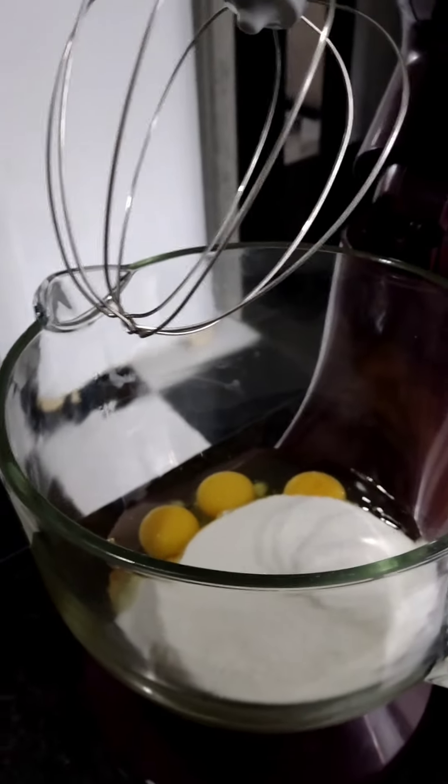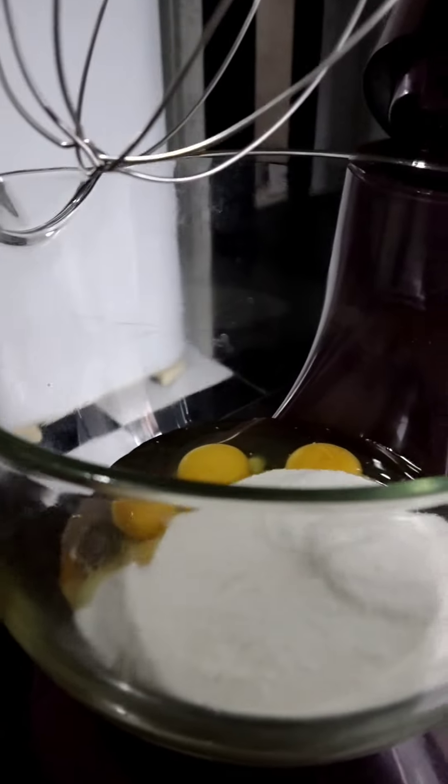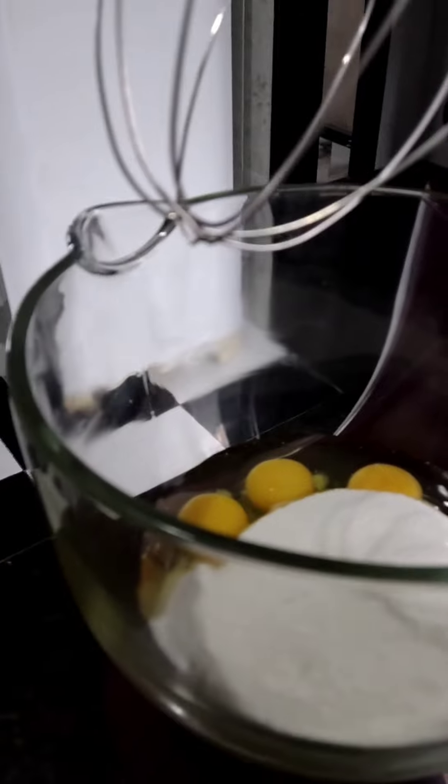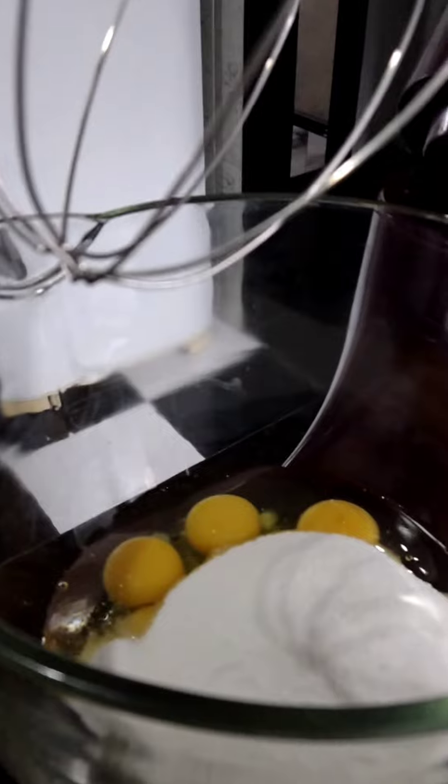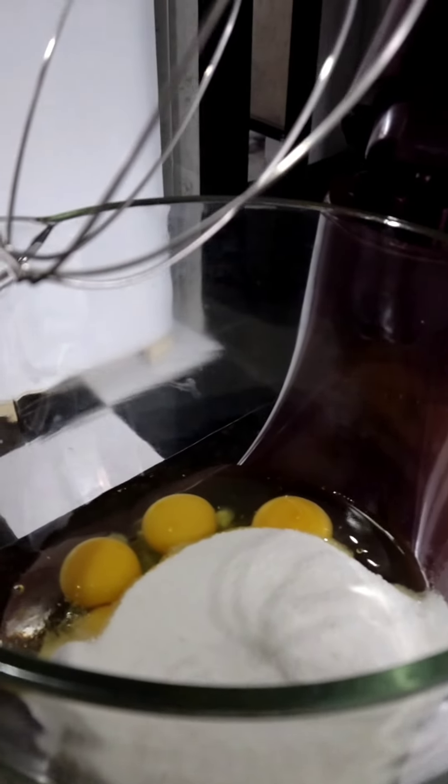I'm going to mix five eggs with two cups of sugar. I'm going to mix it up until it becomes very voluminous. I'm going to make a bun de ló de morango with chantilly. It's very good!